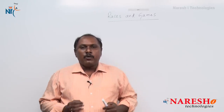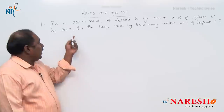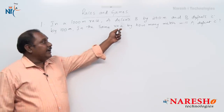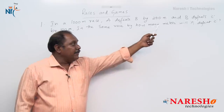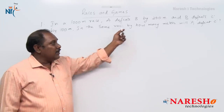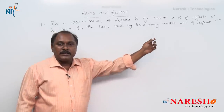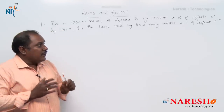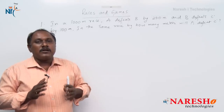Coming to question number 1: In a 1000 meter race, A defeats B by 200 meters and B defeats C by 100 meters. In the same race, by how many meters will A defeat C? Here there should be a condition that A, B and C are running at constant speed.